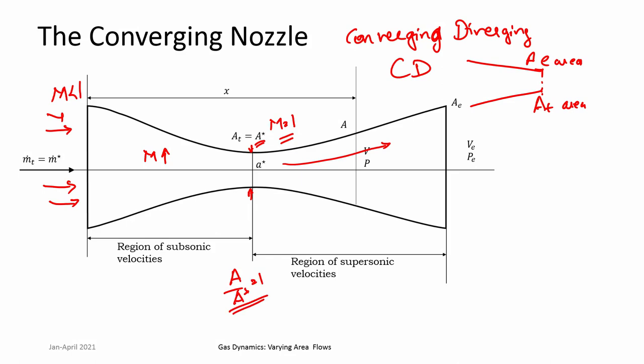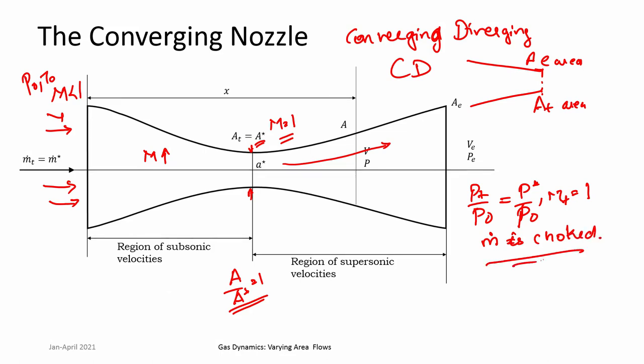The concept of mass flow rate choking is relevant here also, because you have a minimum area and you are giving a certain P₀ and T₀ to this nozzle. If you have given enough P₀ and T₀ such that P_t/P₀ equals P*/P₀, then Mach number at the throat becomes equal to 1 — M_t = 1 — and mass flow rate becomes choked. You should understand that choking of mass flow rate must be understood in proper context. If P₀ and T₀ are fixed and mass flow rate chokes, then whatever the downstream conditions, it cannot change mass flow rate. But if you vary P₀, your mass flow rate will increase linearly.